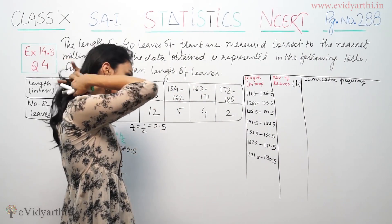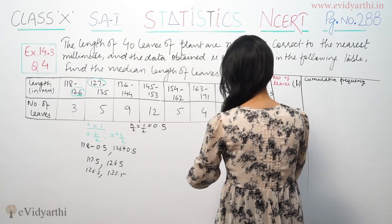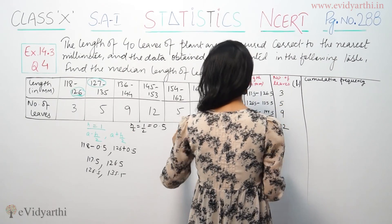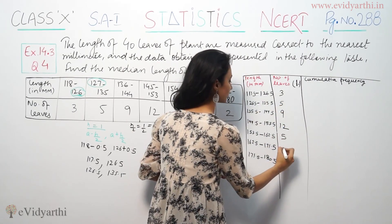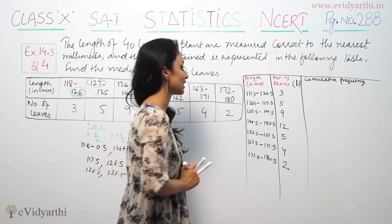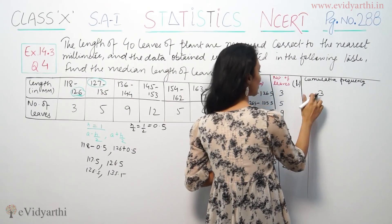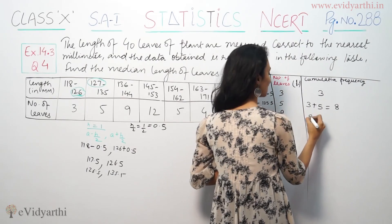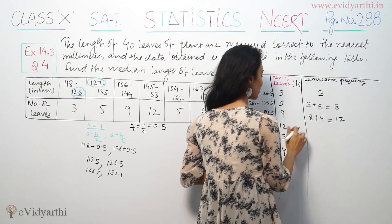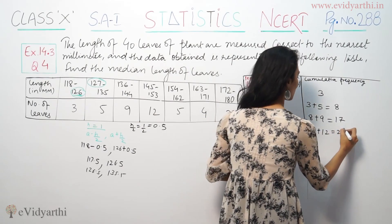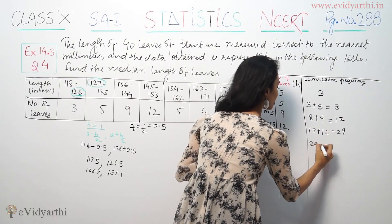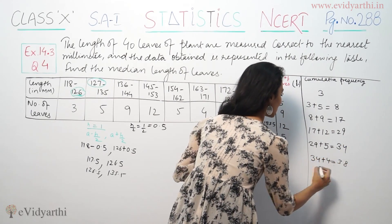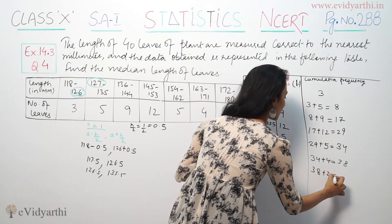Next, the number of pieces — the frequencies — are given as: 3, 5, 9, 12, 5, 4, 2. The cumulative frequencies are: 3, then 3 plus 5 is 8, then 8 plus 9 is 17, then 17 plus 12 is 29, then 29 plus 5 is 34, then 34 plus 4 is 38, then 38 plus 2 is 40.